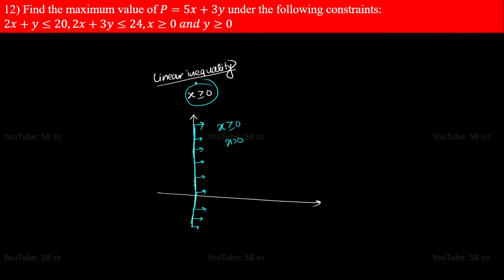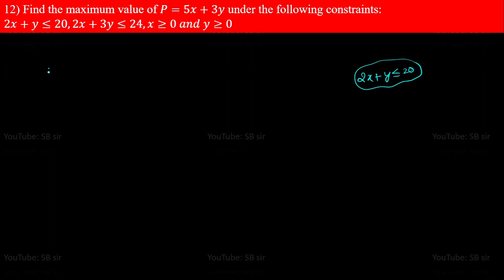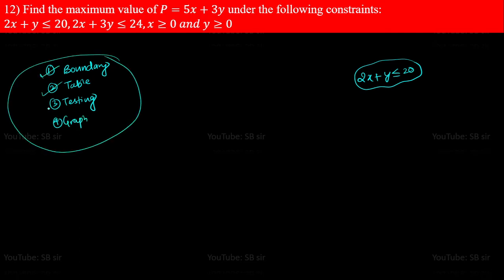If there are two variables, like 2x + y ≤ 20, we have to draw a table to find the set of points through which the boundary line passes, join them with a scale, and check which half plane is included using a testing point. To summarize, there are four steps: Boundary, Table, Testing, and Graph — remember BTTG. B is boundary, T is table, T is testing, and G is graph.